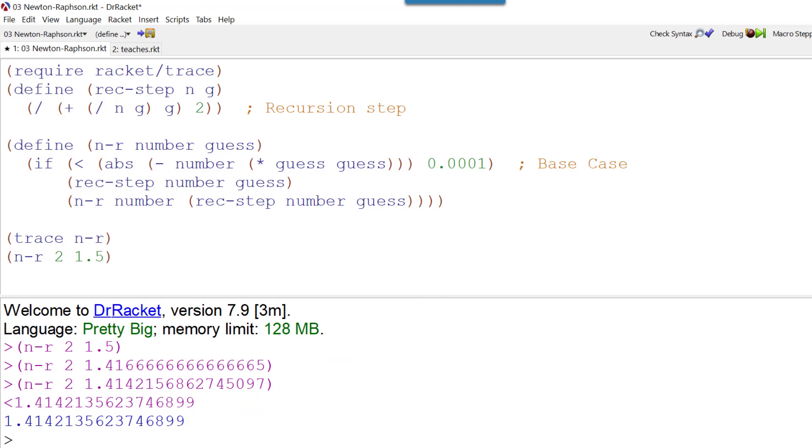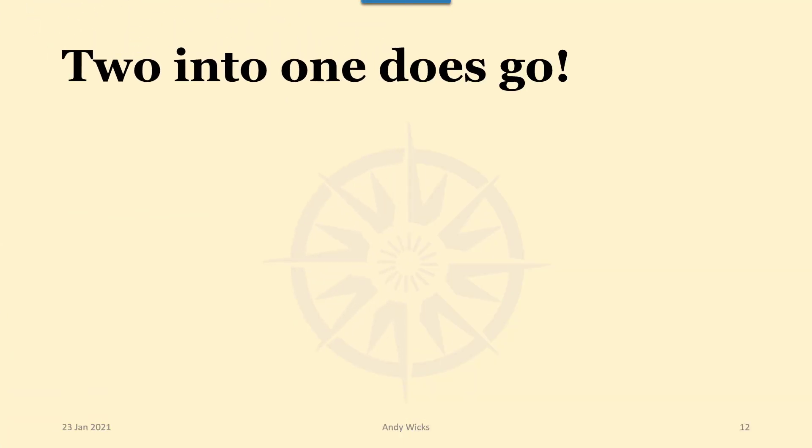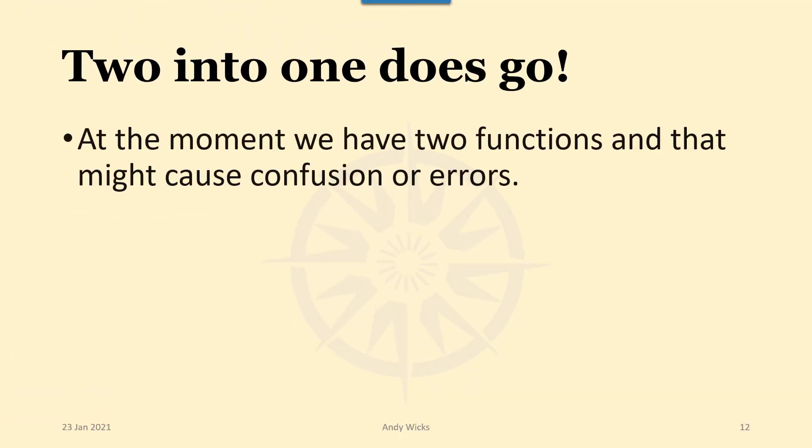But, and there's always a but, let me show you what the problem is. The problem is that we've got two functions. And that might cause confusion or errors. If we've got a program with lots of bits and pieces in, how do we know which bits go together? So what we need to do is to think about this a little more.